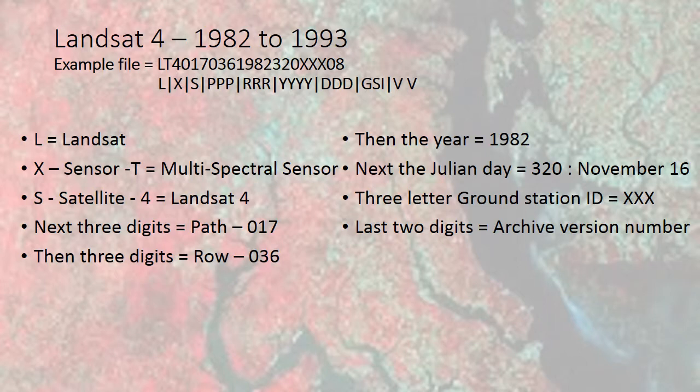With Landsat 4, they started to come up with a more concise set of information about the individual Landsats. You'll notice that it also has a multi-spectral sensor, and the Landsat satellite is listed as 4. This individual file was downloaded in 1982.